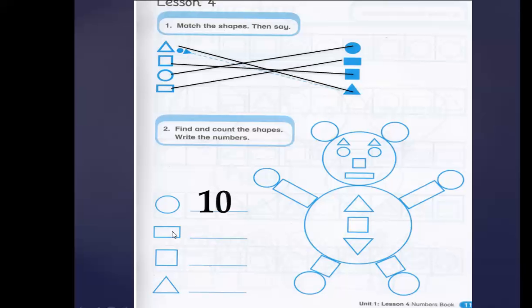Let's count the rectangles together: one, two, and three. We have three rectangles. Let's write three. Very good! Let's go to the other shape — it is a square. Let's count the squares together: one, two, three, and four. We have four squares. Number four. Very good!